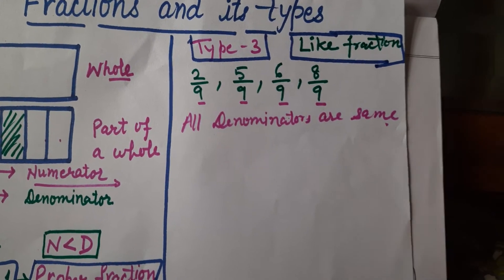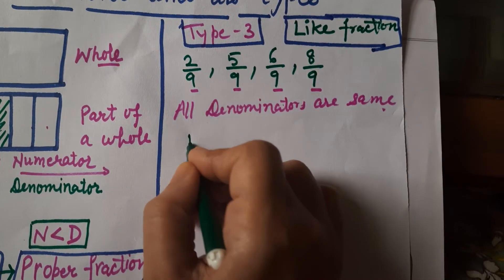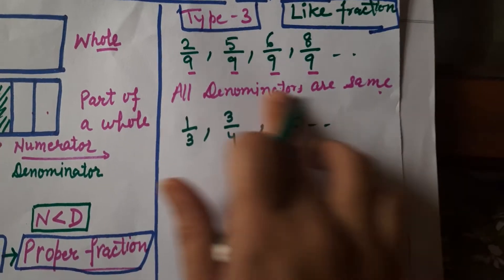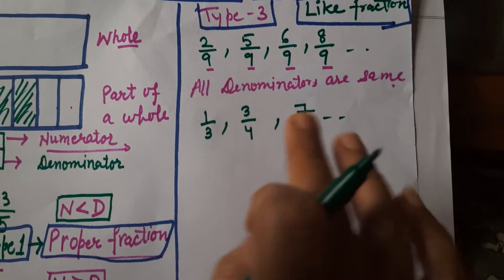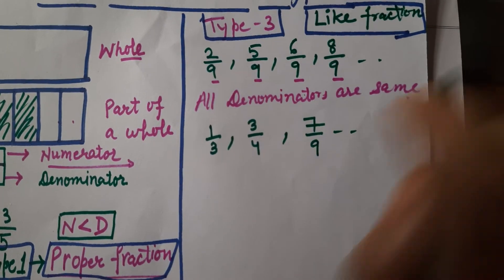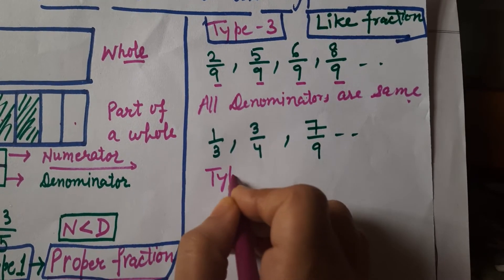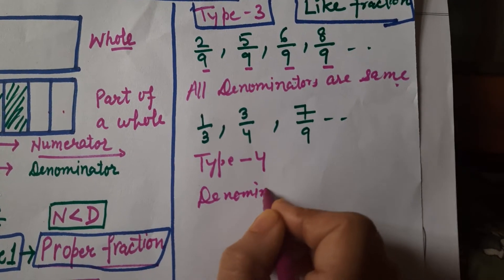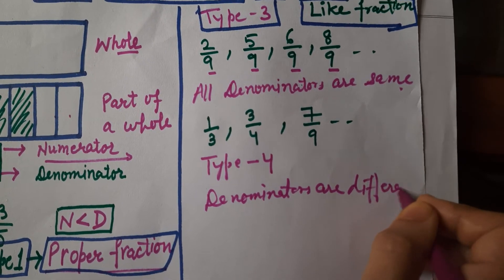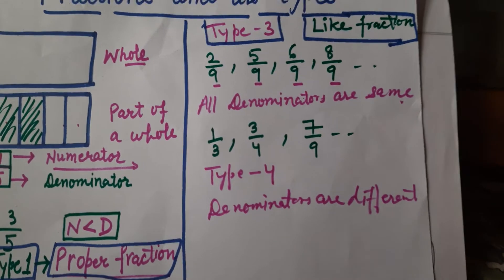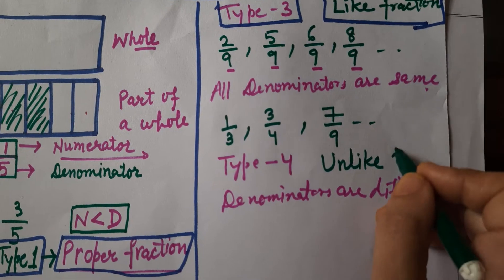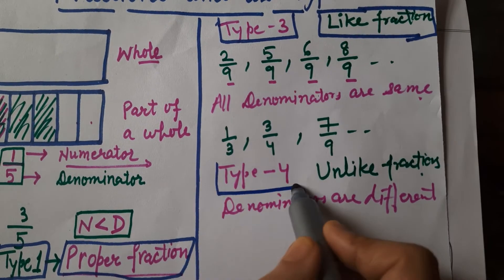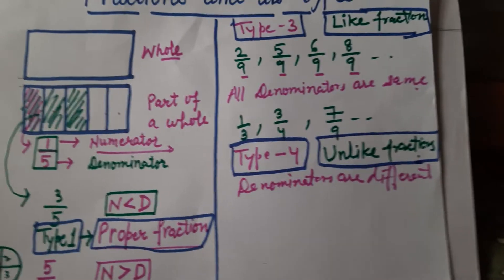Now let's look at type four. Have you seen fractions like these: one by three, three by four, seven by nine? Nothing is common — not the numerator, not the denominator. These are proper fractions since the numerator is less, but this type — where the denominators are different — is type four, and it is known as unlike fractions.